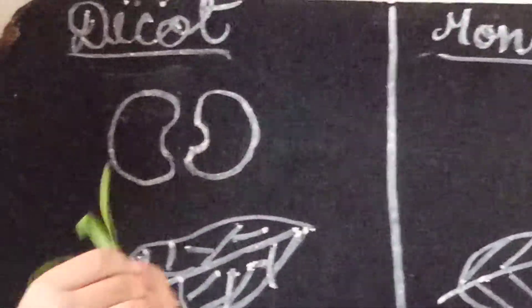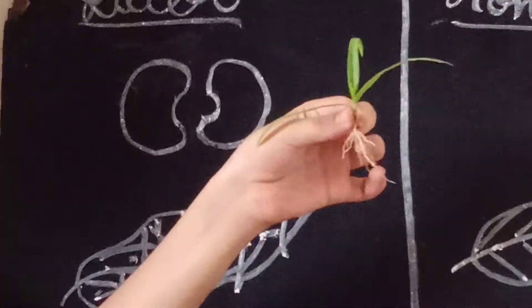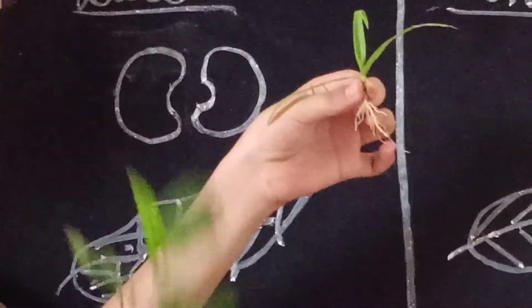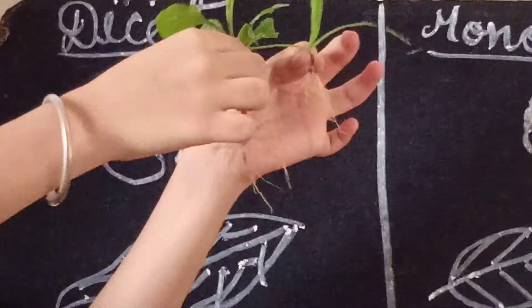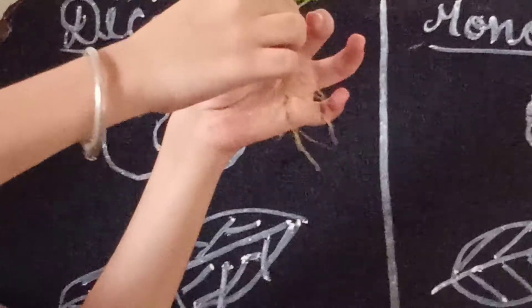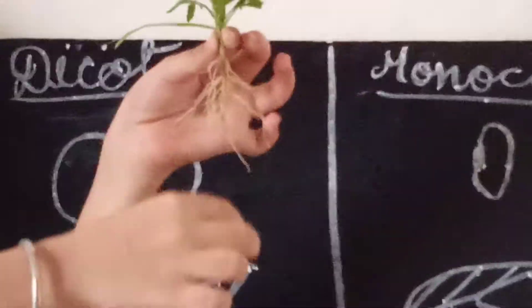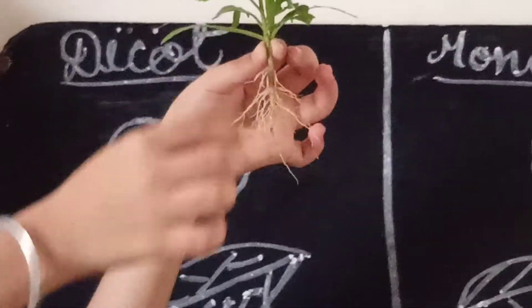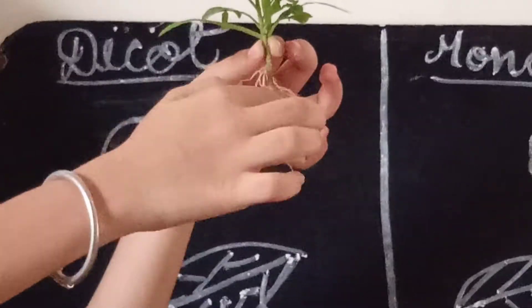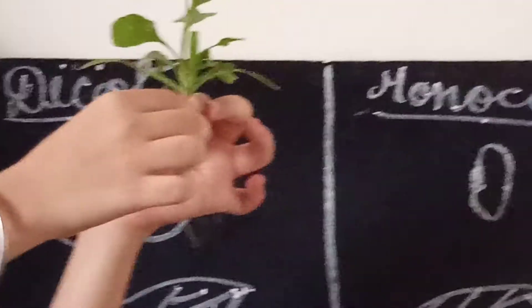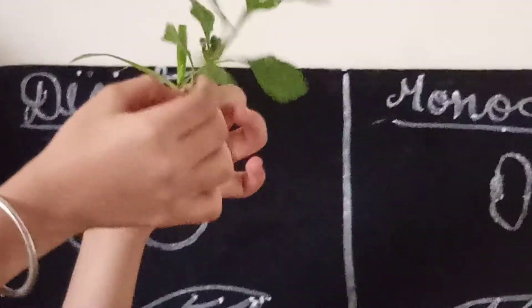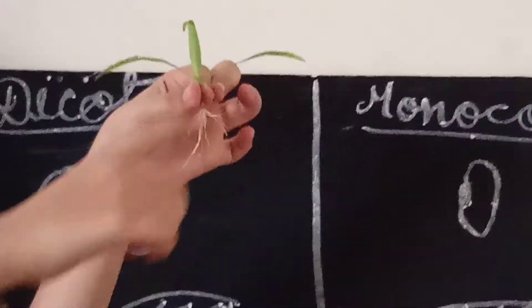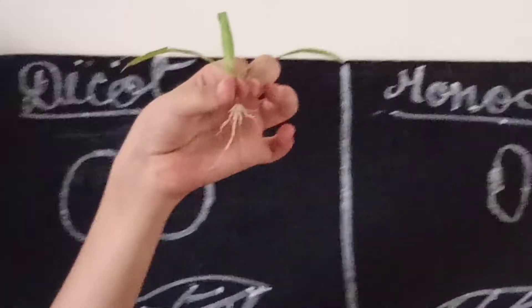Now I will compare these two roots. This is a tap root and this is the fibrous root. See how long the tap root penetrates into the soil, and it also has secondary and tertiary roots. But this grass has a bunch of roots — a fibrous root system.